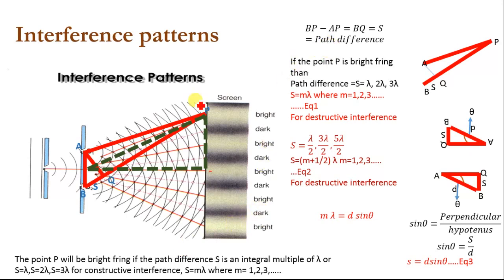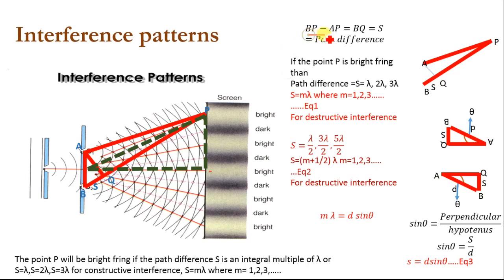Now the path difference. The wave generated from slit B travels a distance S longer than the distance travelled by the wave generated from slit 1. So the path difference between them is BP minus AP, where BP is the distance between slit B and point P, and AP is the distance between slit A and point P. So BP minus AP equals BQ, which we name S. This S is the path difference between the two waves.